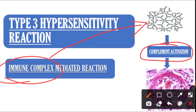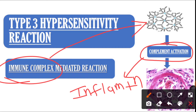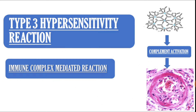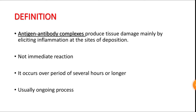Because of complement activation, a person will have inflammation and tissue injury. The tissue injury and inflammation is because of immune complex formation and complement activation, that's why it is known as immune complex mediated type 3 hypersensitivity reaction. The process begins with antigen-antibody complex formation, which induces tissue damage mainly by initiating inflammation at the site of deposition.